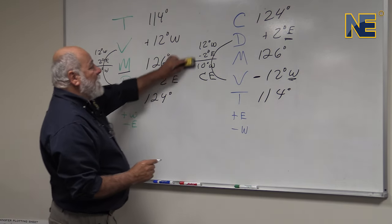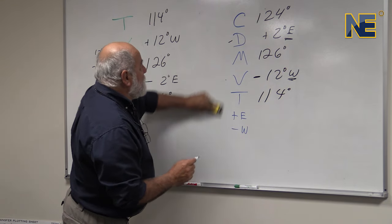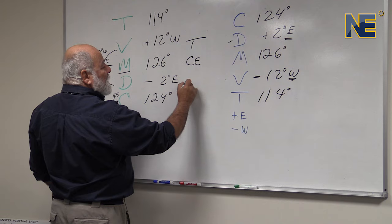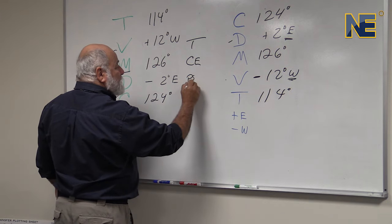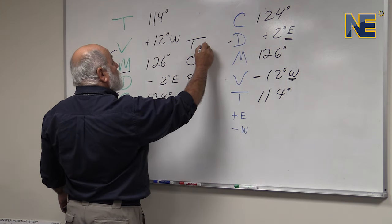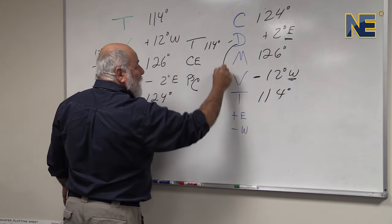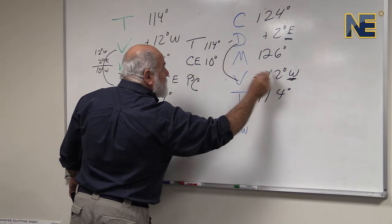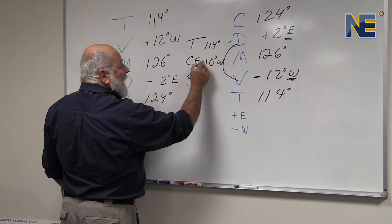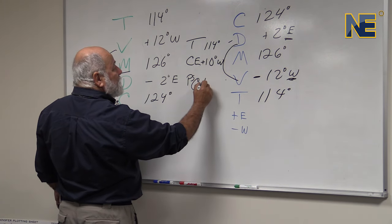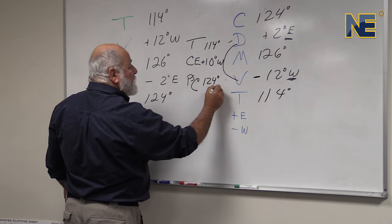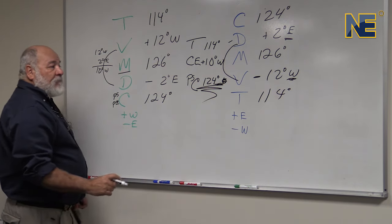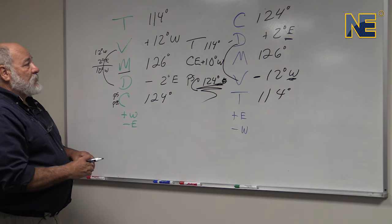What would happen is we'd go from true course to compass error directly to per ship's compass. If our true course was 114 degrees and our combined compass error is 10 degrees westerly, we would be adding that westerly, so our ship's compass would be 124 degrees — the course we steer to make good 114 degrees true.